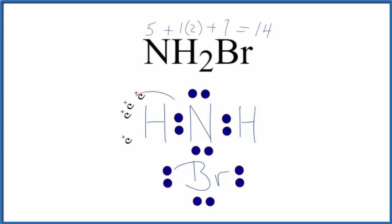You'll notice that each hydrogen has two electrons, so they're good. Nitrogen here has eight, and the bromine also has eight. So this is our Lewis structure for NH2Br. This is Dr. B, thanks for watching.